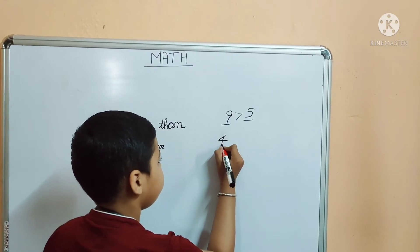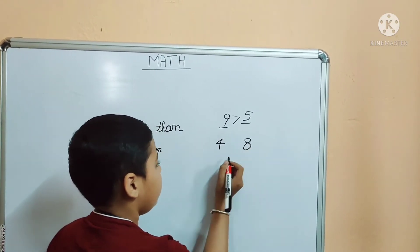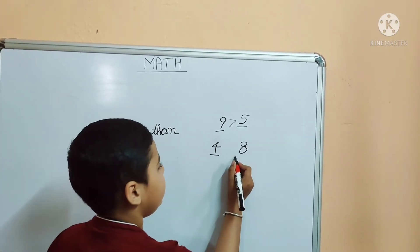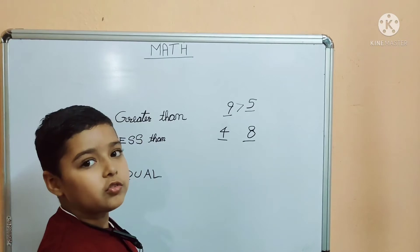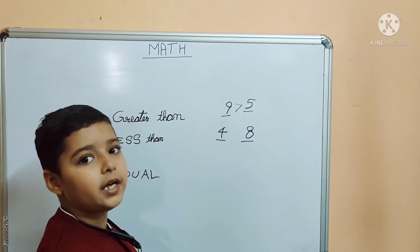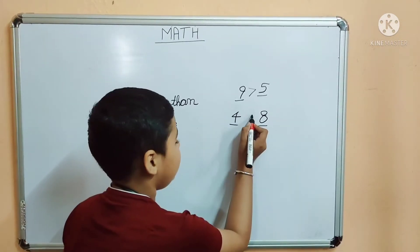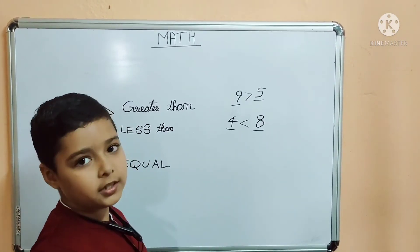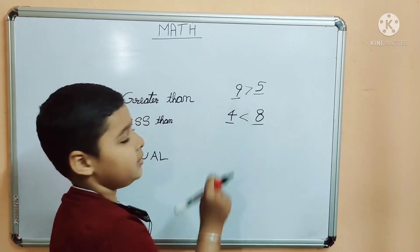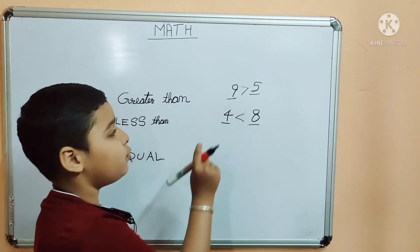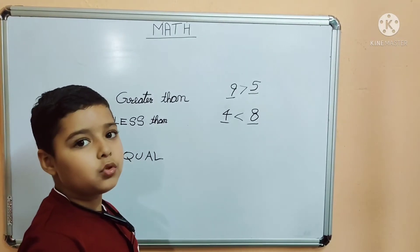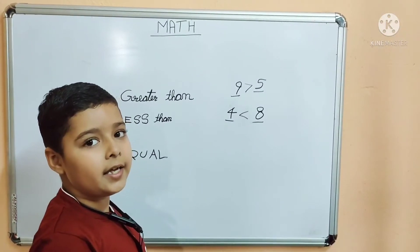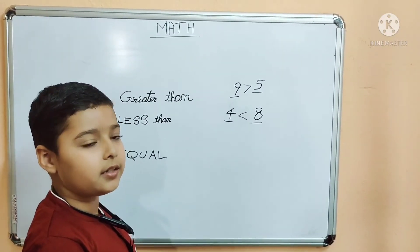Let's take another example. 4 and 8 — here, 4 is the smaller number and 8 is the bigger number. So which symbol do we take here? Yes, it is the less than symbol, because 4 is the smaller number and 8 is the bigger number. The symbol's mouth opens at the bigger side.